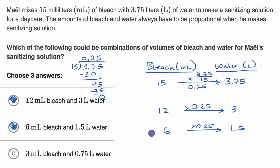What about 3 and 0.75? So 3 and 0.75. Am I multiplying by 0.25? Yeah. If I multiply 3 times 25 hundredths, I get 75 hundredths. So that works. So actually, the first three choices are our three answers.